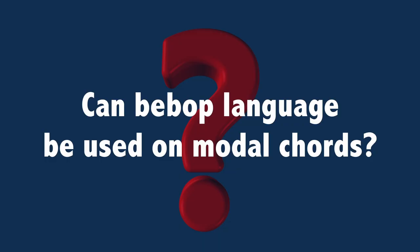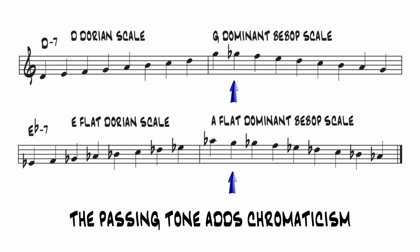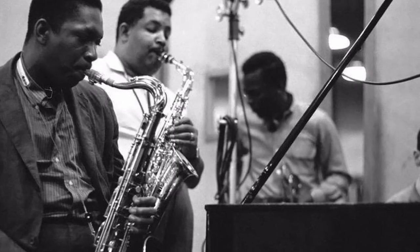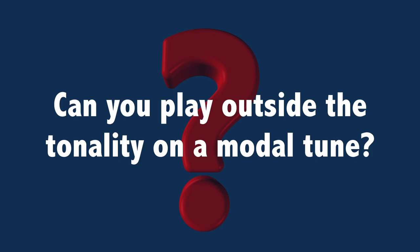Can bebop language be used on modal chords? In the videos, I demonstrated the use of the dominant bebop scale over the related minor chords. The addition of the major 7 as a passing tone in the Mixolydian scale adds chromaticism, just like the flat 5 does in the blues scale. The bebop language is essentially the addition of chromaticism to lines based on chord and scale tones. Although the chromatic approach and connecting notes make the lines rather complex, introducing many points of tension and resolution, they do clearly define the harmony, which is mostly based on 2-5-1. So yes, bebop language can be used on modal tunes — for a good example, listen to Cannonball Adderley playing on So What.